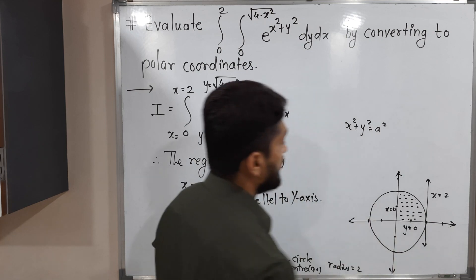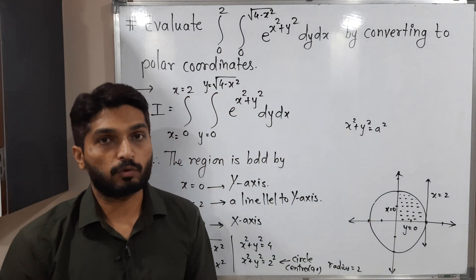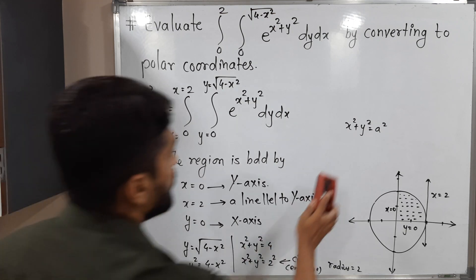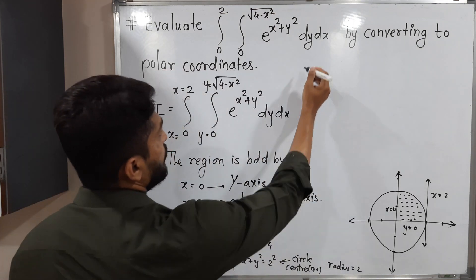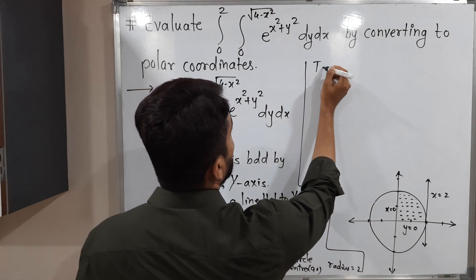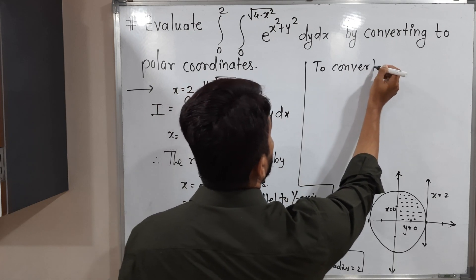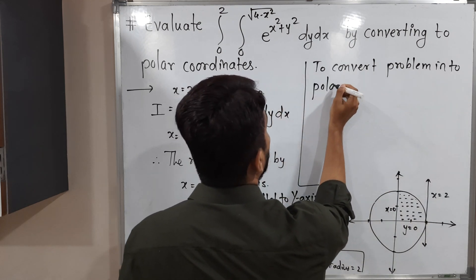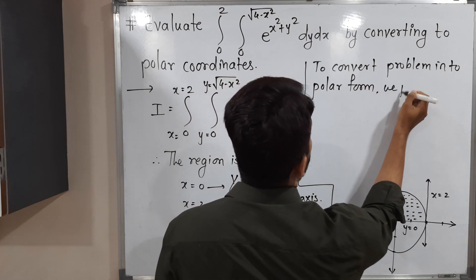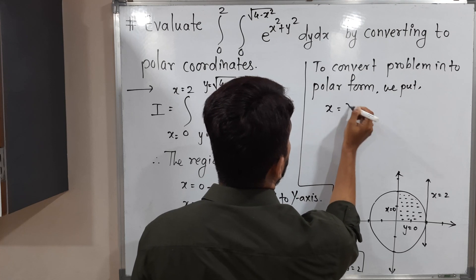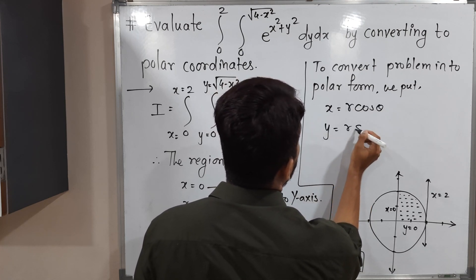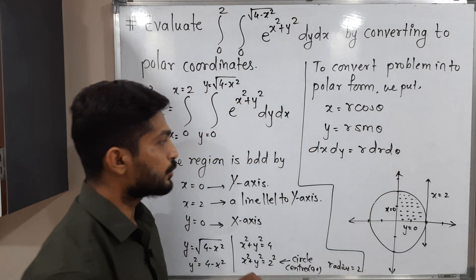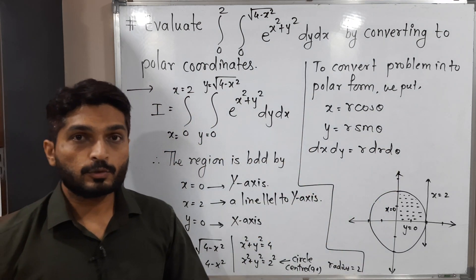This first-quadrant region is our region of integration. To convert the problem into polar form, we use the standard substitution: x = r cos θ, y = r sin θ, and dx dy = r dr dθ.